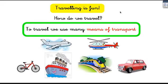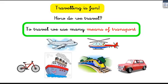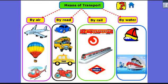We know that travelling is excellent, but how do we travel? We travel using many means of transport. For example, the airplane, helicopter, the bicycle, the ship, train, and the car. So how do we classify these means of transport?